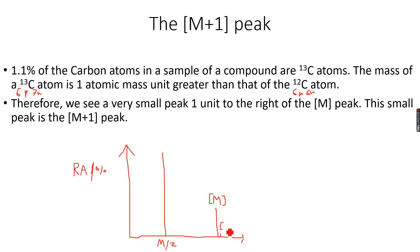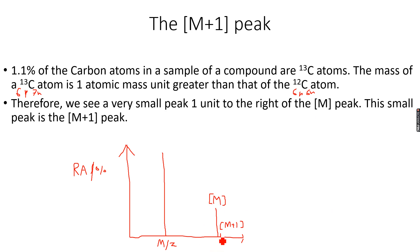We can label this as the M peak and this as the M+1 peak. The M peak will be a lot more abundant than the M+1 peak. You will only calculate the molecular mass using the M peak, because the M+1 peak arises just because of carbon-13. The actual molecular mass will always be due to the M peak, so the m/z value of the M peak gives the relative molecular mass.